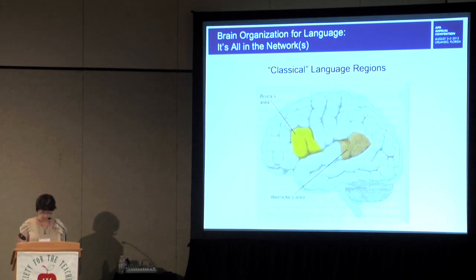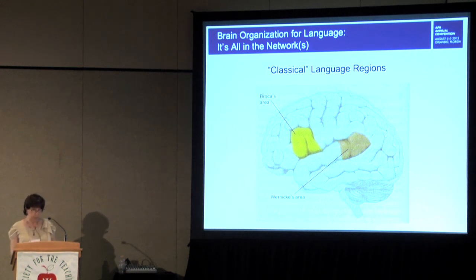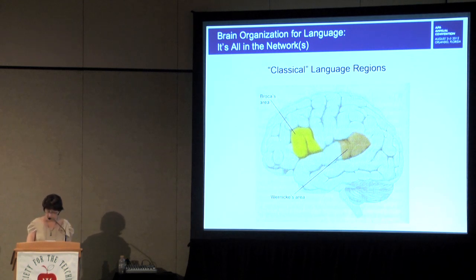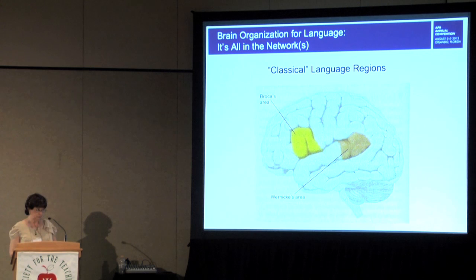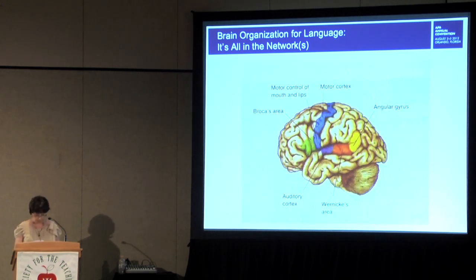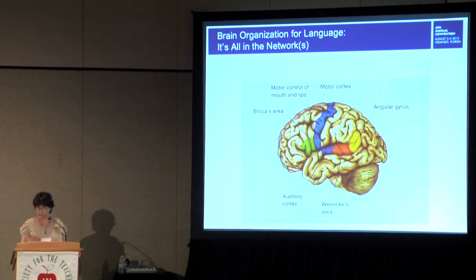Why don't we start out with the classical view of language in the brain? When most people think of language in the brain, they think of Broca's area in the left inferior frontal cortex and Wernicke's area in the posterior part of the left temporal cortex. The thumbnail sketch is that Broca's area is involved with language expression and Wernicke's area is responsible for comprehending language. A white matter pathway, the arcuate fasciculus, is usually said to connect these two language-relevant regions and to mediate their coordination.